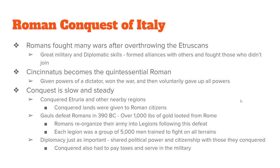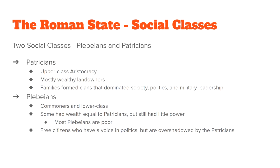Those who were conquered also had to serve in the military and pay taxes whether they wanted to or not. In the Roman Republic, there are two classes of people: the Plebeians and the Patricians. The Patricians are upper class, mostly wealthy, and dominated Roman society. The Plebeians are lower class, though some had a lot of money.